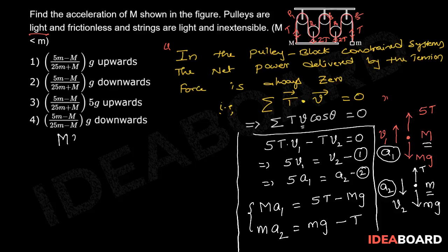So, capital M A1 is equal to 5T minus capital MG and small m 5 times A1 equals MG minus T. Now, let us multiply this equation by 5, then we get 25M A1 is equal to 5MG minus 5T.